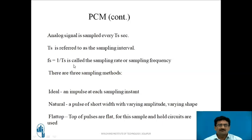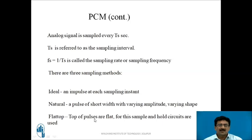Samples have three different types: first, the ideal case — an impulse at each sampling instant; second, natural — a pulse of short width with varying amplitude; and third, flat-top — where pulses have a flat shape rather than the natural shape of the input signal. Flat-top outputs are obtained using sample-and-hold circuits.